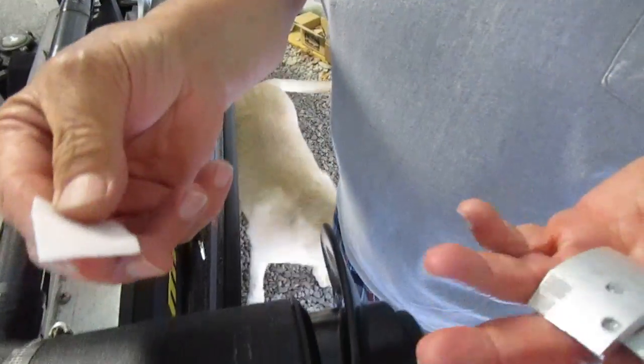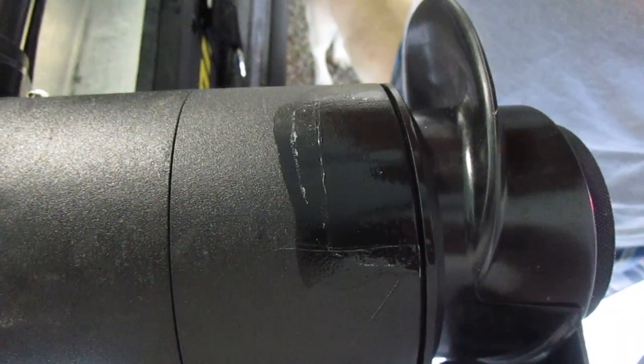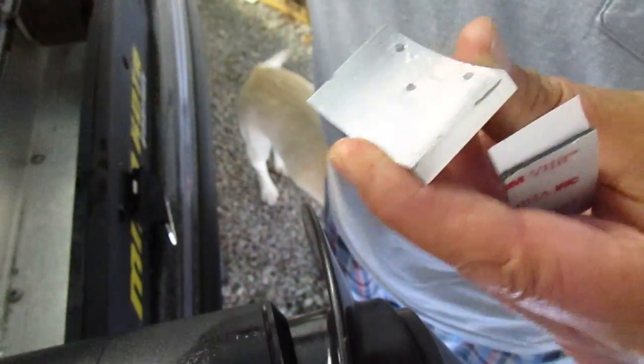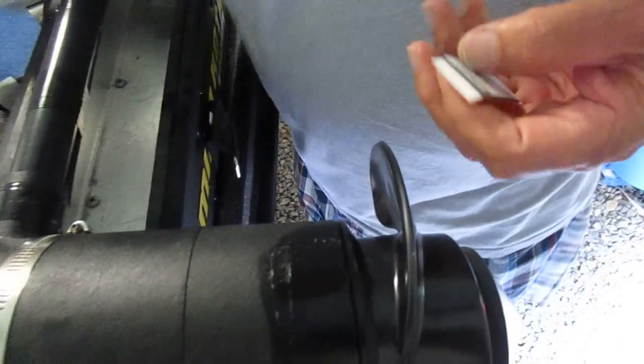Here's your alcohol wipe. Just make sure the area is wiped clean and the back of the blade. Just make sure it's wiped clean.